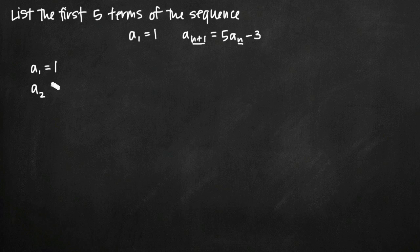So to find a₂ we're going to get 5, which comes directly from our a_{n+1} formula, times a_n the previous term. That's a₁ so we multiply that by 1 because the value of a₁ is 1, and then we subtract 3.